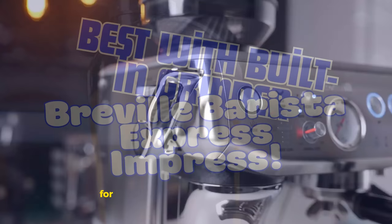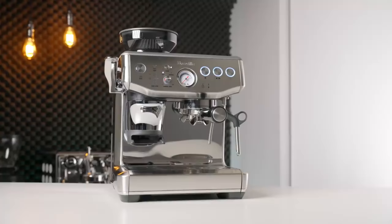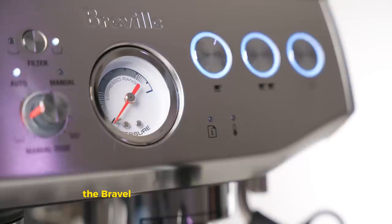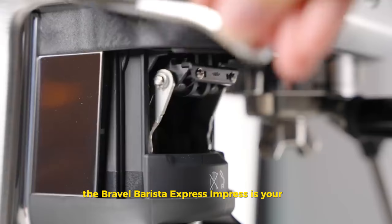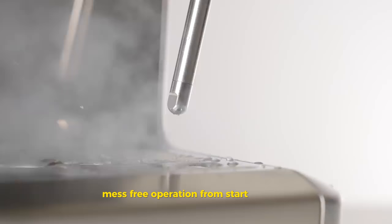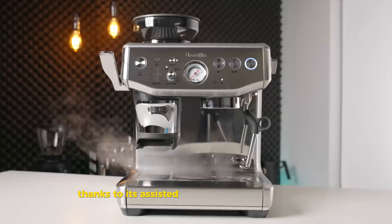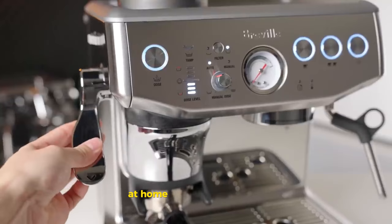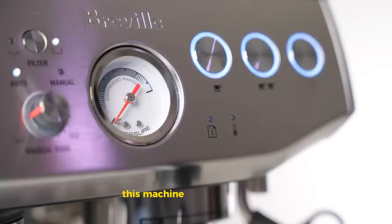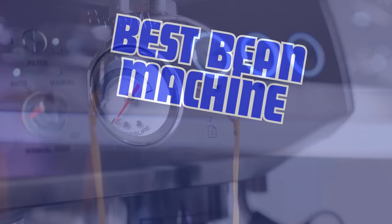Best with built-in grinder, Breville Barista Express Impress. For those who seek an all-in-one solution without the mess, the Breville Barista Express Impress is your go-to. It's the only machine we've seen that allows for a hands-off, mess-free operation from start to finish, thanks to its assisted tamping and dosing system. What sets it apart is the Breville's Impress Disc System, ensuring a perfectly tamped coffee puck every time. It's not just about convenience, it's about achieving a consistent quality of espresso at home with minimal effort. And for parents or multi-taskers, imagine making a perfect shot while juggling a hundred other things. This machine makes it possible.